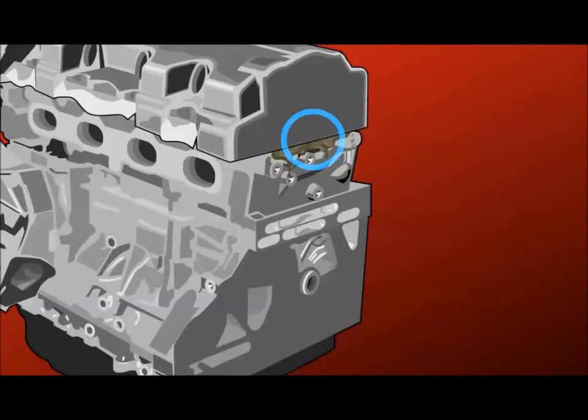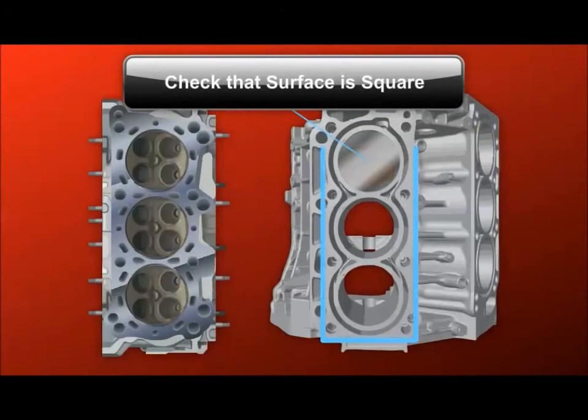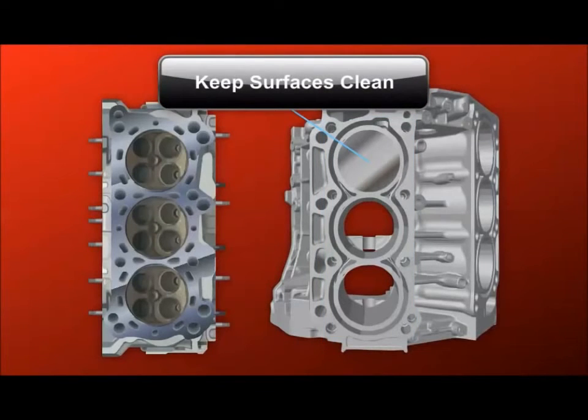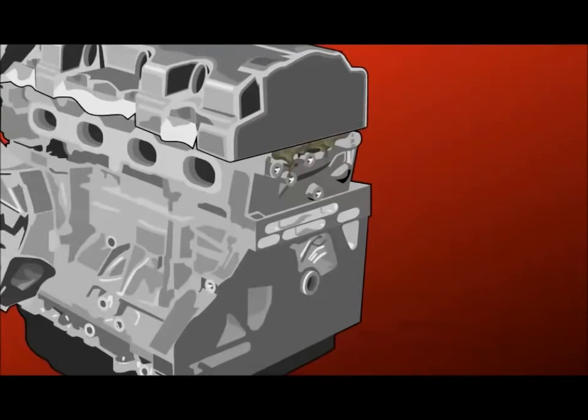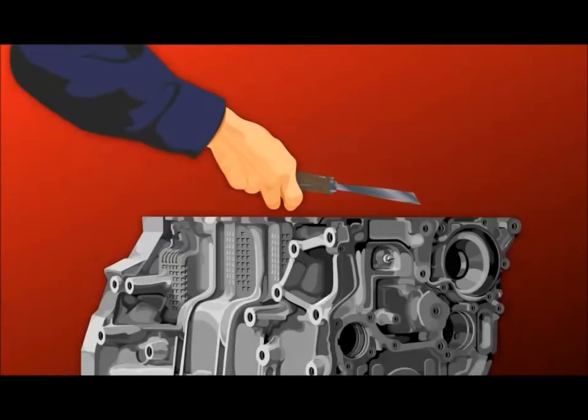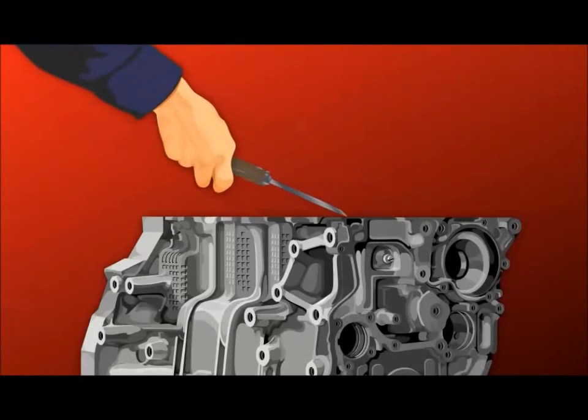When the leak occurs at a flat gasket between two mating surfaces, make sure the sealing surfaces are flat and square before replacing the gasket. Also make sure the surfaces are clean during reassembly. Chunks of carbon or metal can hold sealing surfaces apart, causing leaks. Repair any problem you identify prior to reassembly.